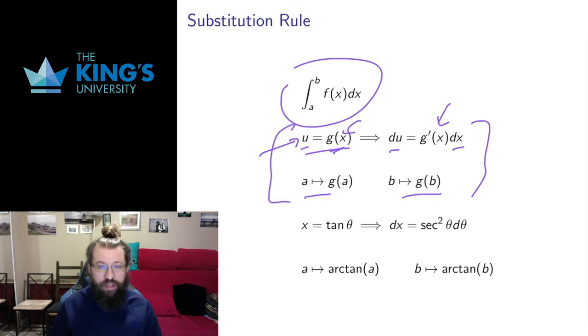There was one exception in single variable techniques, and those were trig substitutions. In trig substitutions, the order is reversed. The original variable is now the dependent variable, and the new variable is the independent variable.